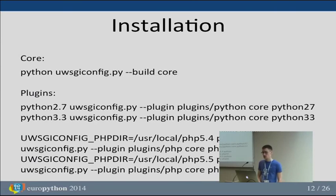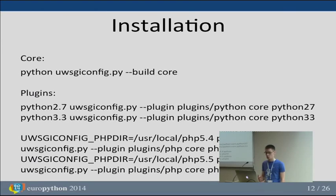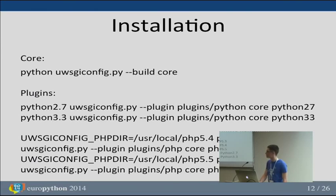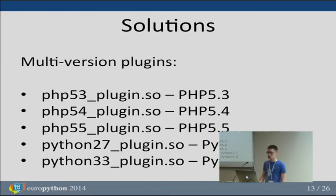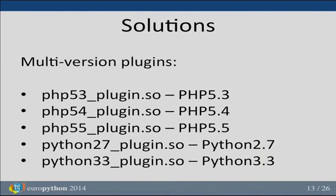Now let's see how UWSGI solves the problems we had with Apache and mod_wsgi. First: multi-version plugins. This was the biggest problem for us, and it just works in UWSGI. You compile as many plugins as you need and it just works.